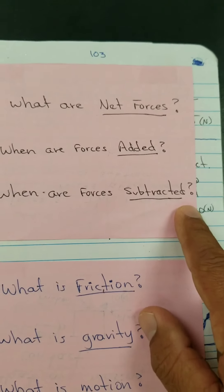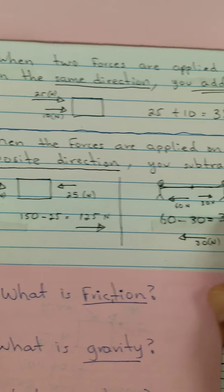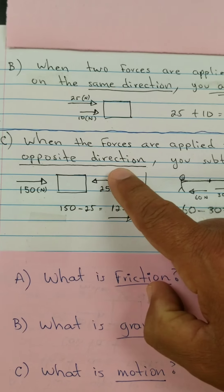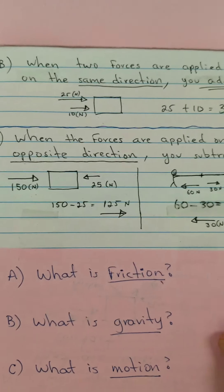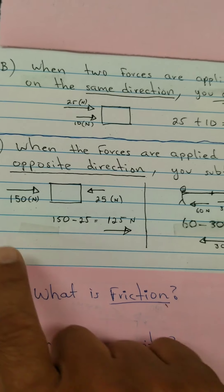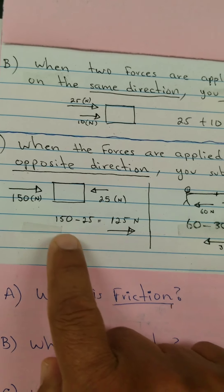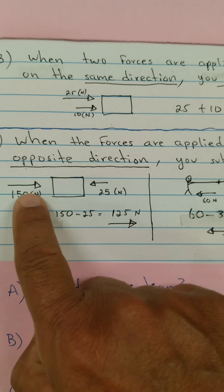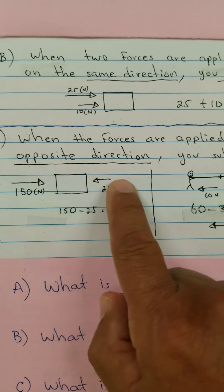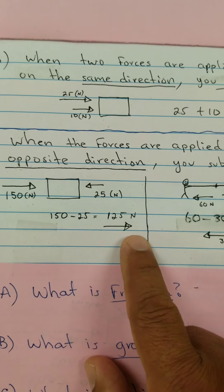Letter C: when do you subtract forces? You subtract forces when they are applied in opposite directions. For example, 150 Newtons going to the right versus 25 Newtons going to the left — after subtracting, the net force is 125 Newtons, and the object will move to the right.